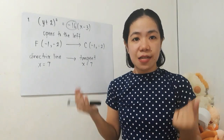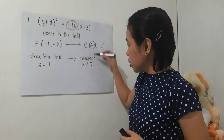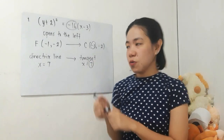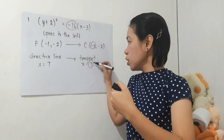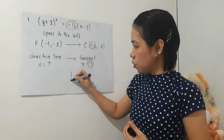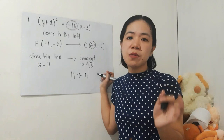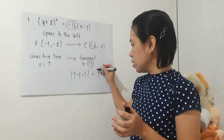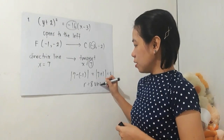Since we already have the center, what we need now is the radius. You can find the radius by looking at the distance from the x-coordinate of the center to the point of tangency. The radius will be the distance from the x-coordinate of the circle's center to the directrix, which is x equals 7. If we compute for the distance: 7 minus negative 1, which equals 7 plus 1, that is 8 units. Therefore, the radius is equal to 8 units.